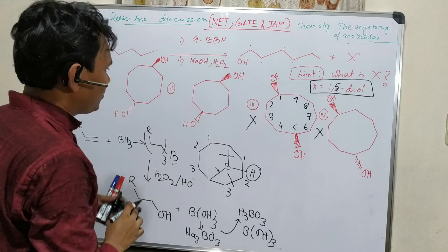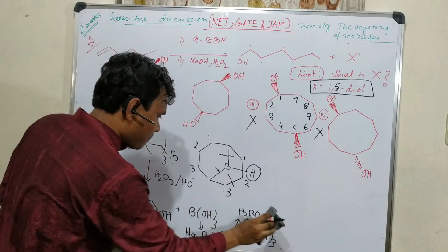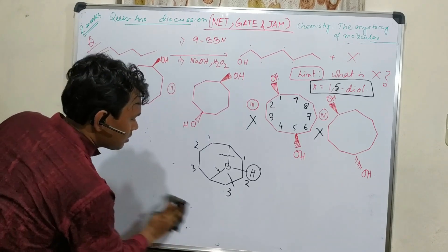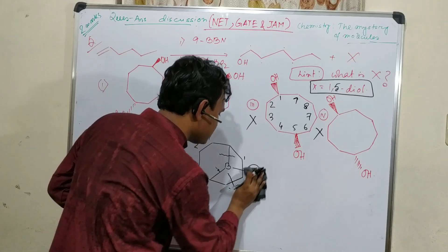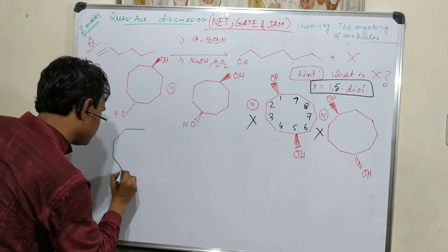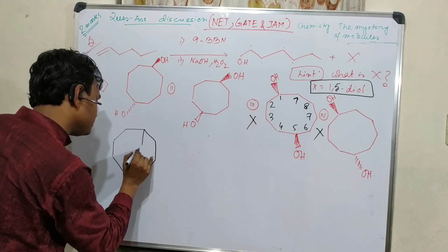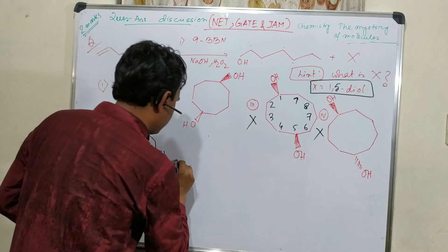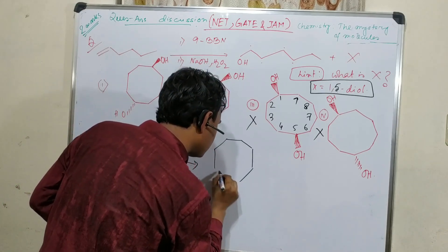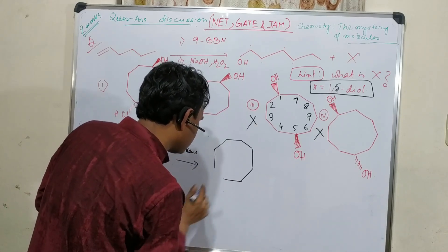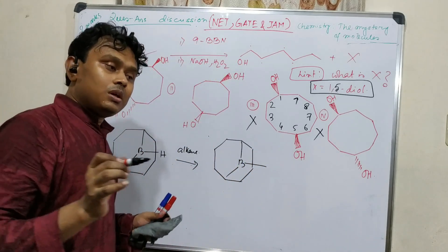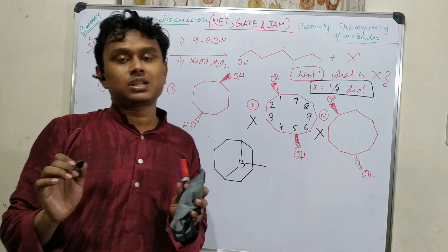So this option is gone. Now, what we have learned up to this point is what this boron reagent produces. This boron reagent produces 9-BBN with hydrogen, and it gets attached to this alkene.